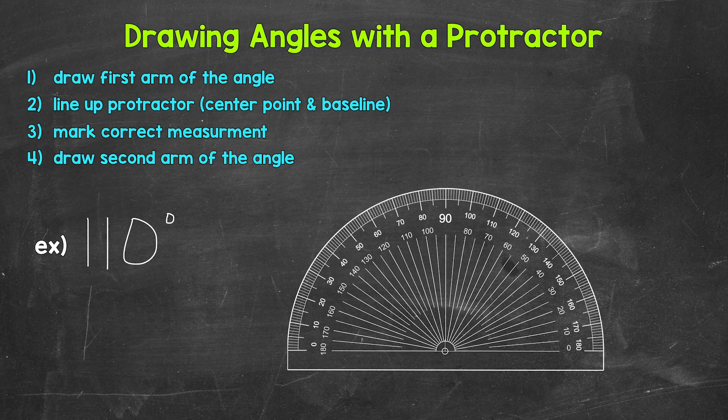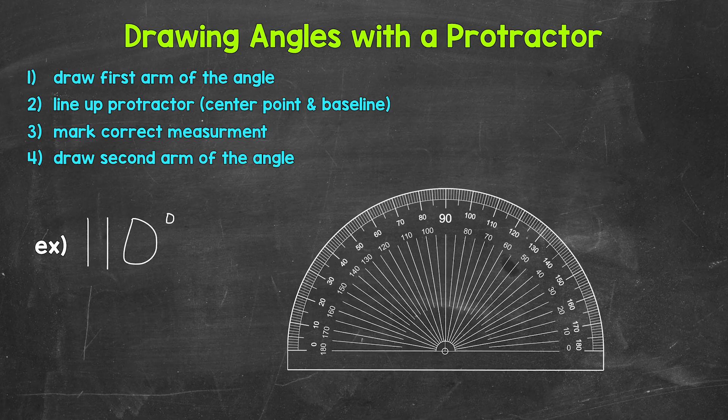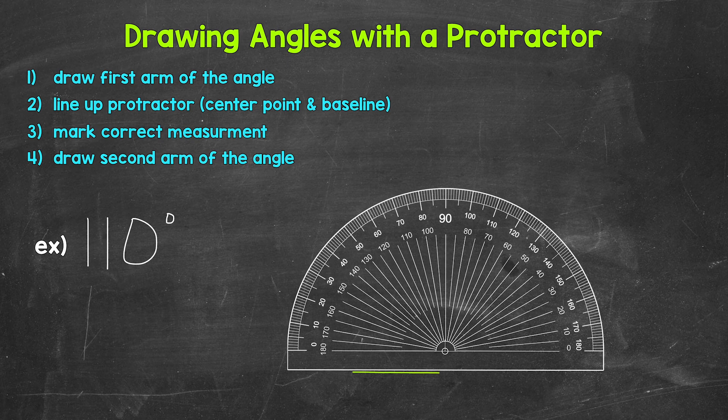Now, our first step when drawing an angle using a protractor is to draw the first arm of our angle. All we need to do is use a straight edge to draw a straight line. We can use the straight side of our protractor or even a ruler. I'm going to use my protractor and draw a straight line like this.